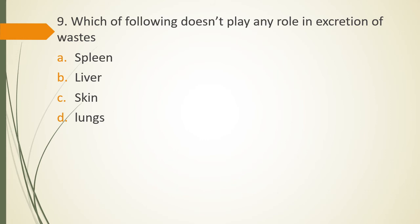Question 9. Which of the following doesn't play any role in excretion of waste? Spleen, liver, skin, lungs. Which of the following doesn't play any role in excretion of wastes? The correct answer is Option A. Spleen has no role in excretion of any waste. Liver plays its role. Skin plays its role. Lung has a role. However, spleen doesn't have any role in excretion of wastes of body.